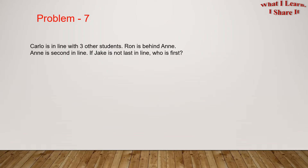Problem seven. Carlo is in a line with three other students. Ron is behind Anne. Anne is second in line. If Jake is not last in line, who is first?